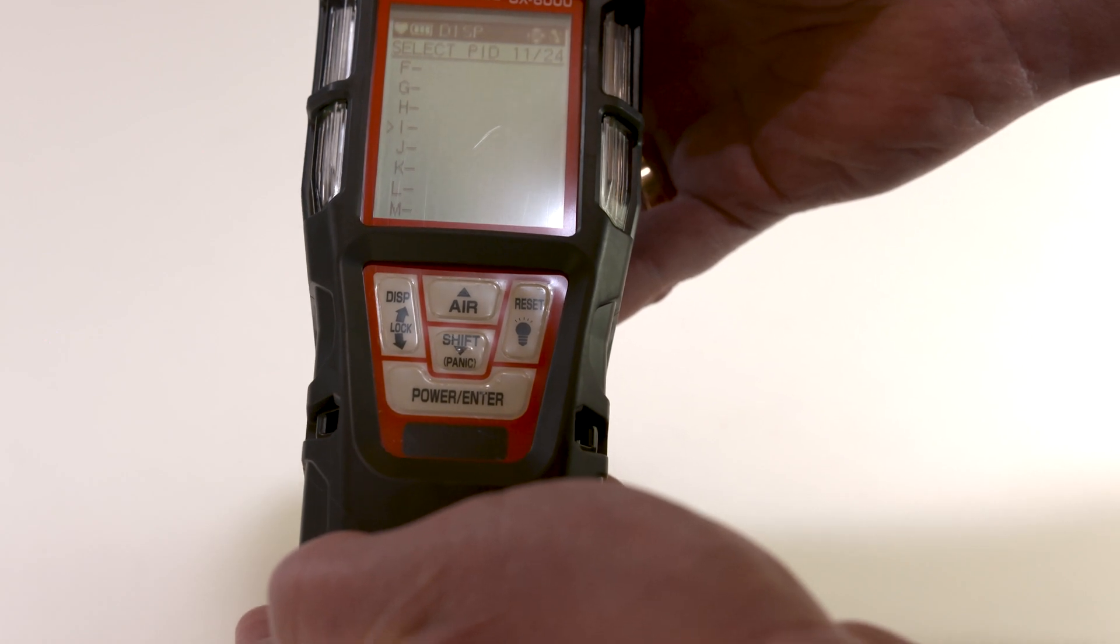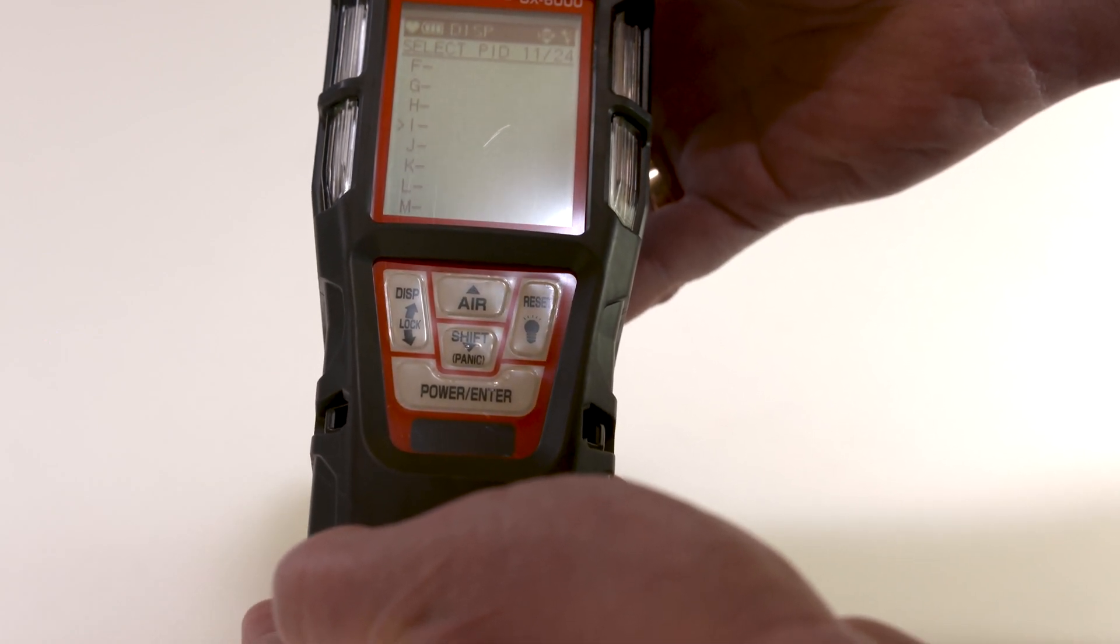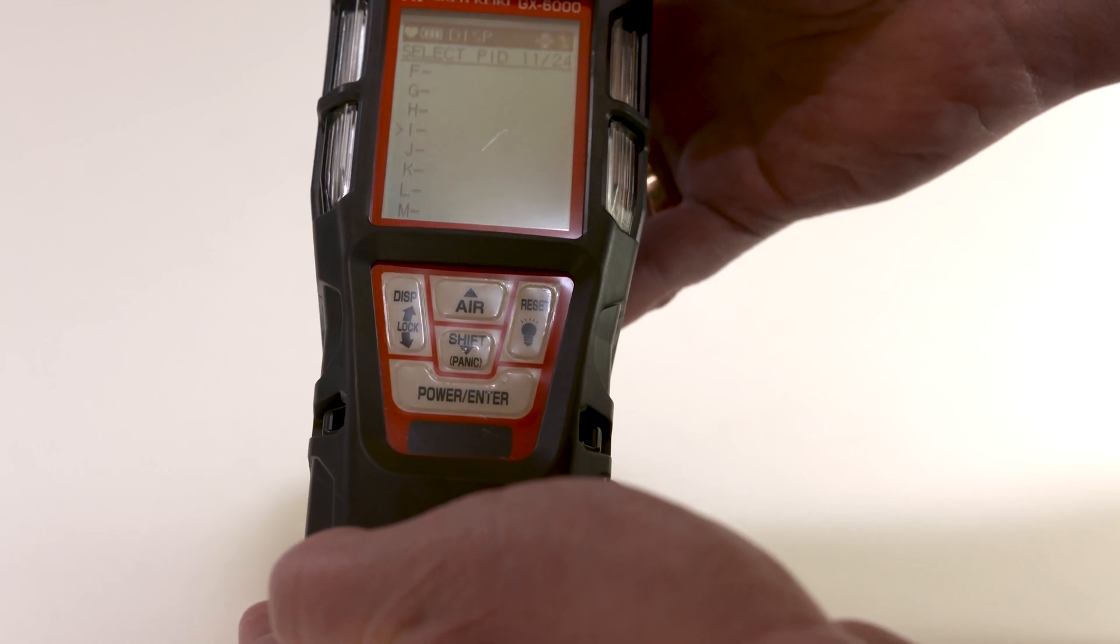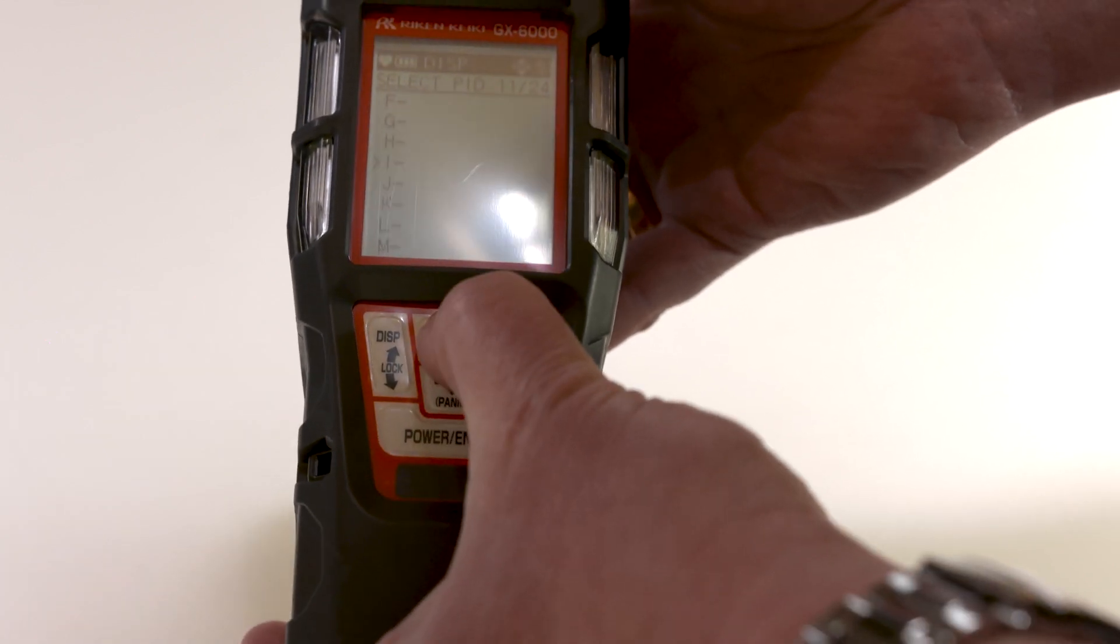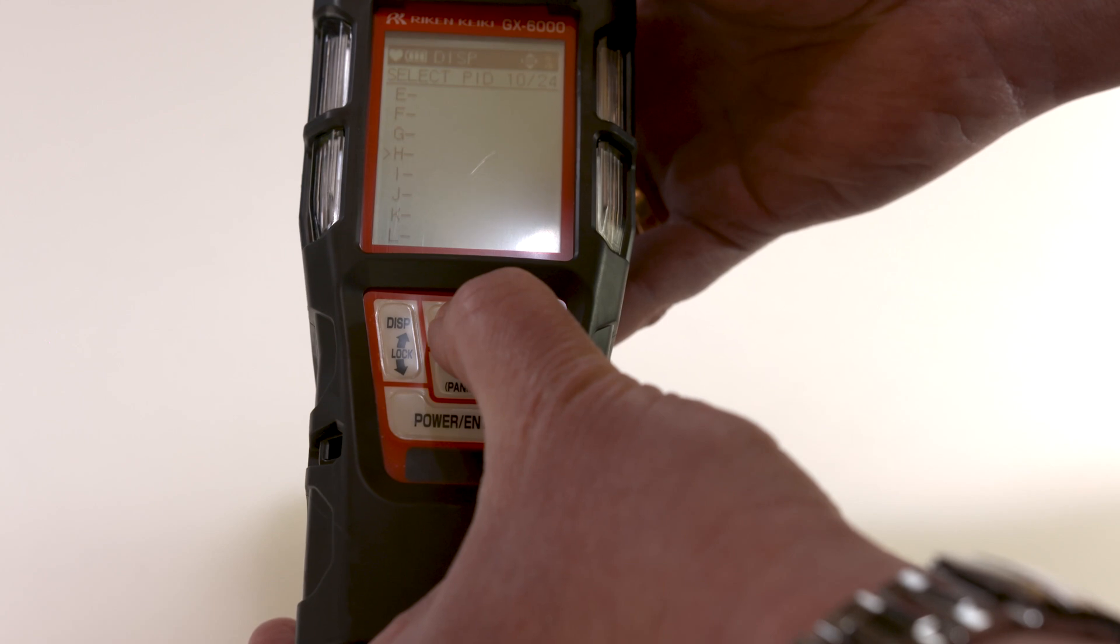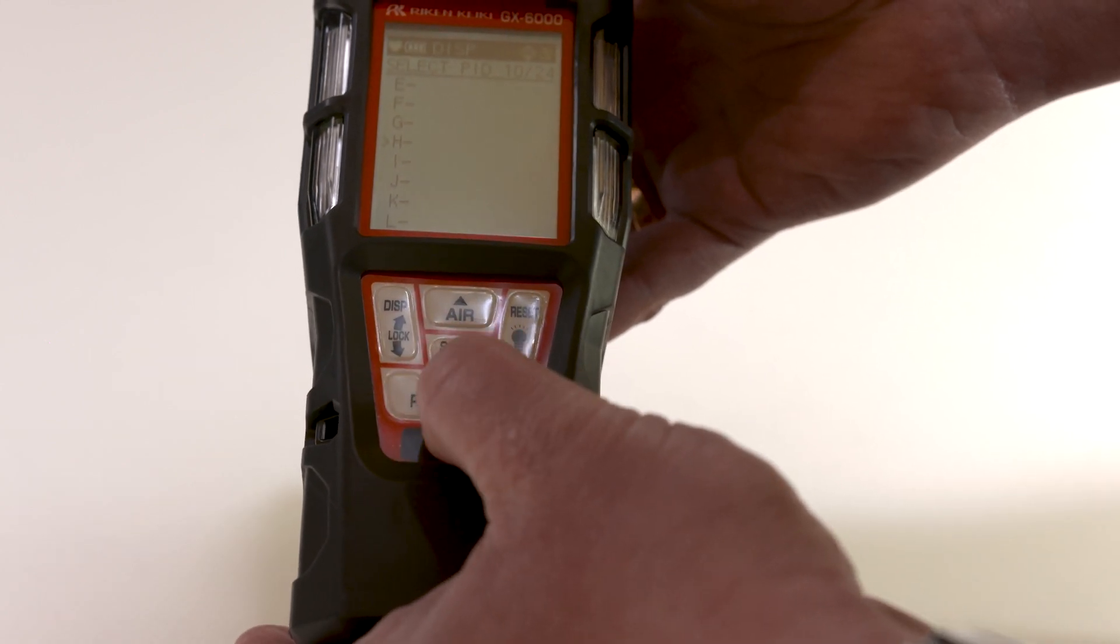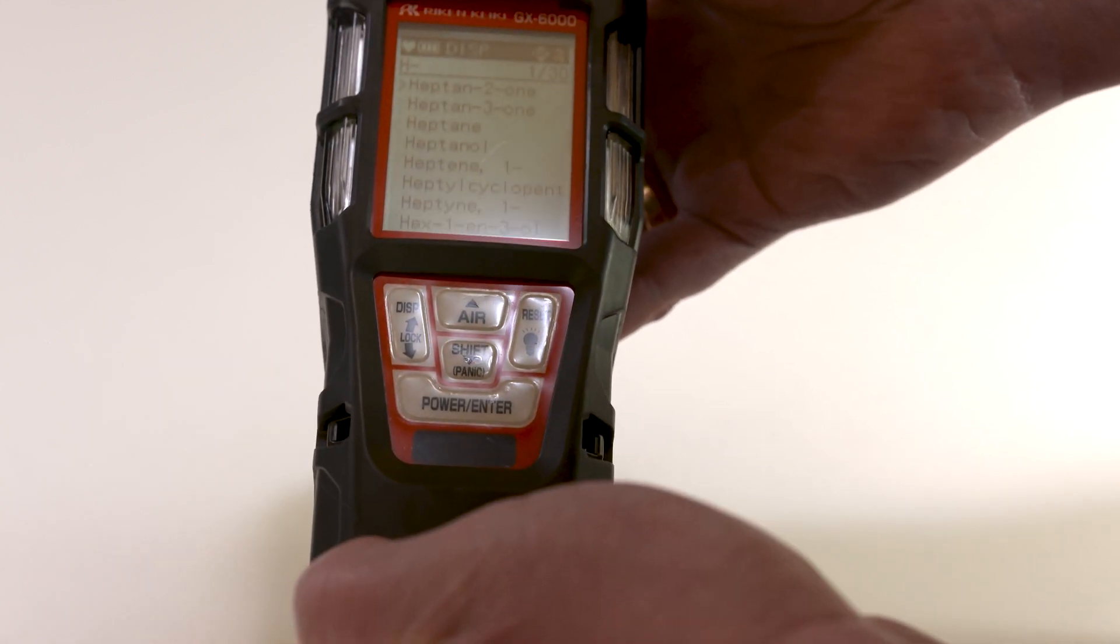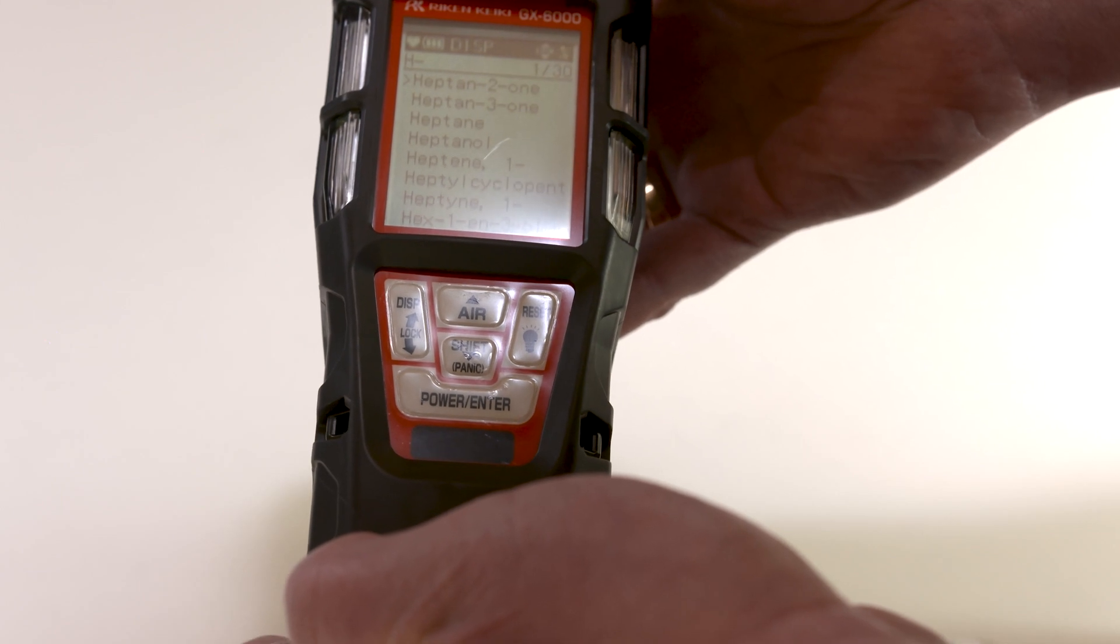Select the first letter of the target gas to be detected using the up and down buttons in the gas list. Press the enter button. The various gas types are displayed.